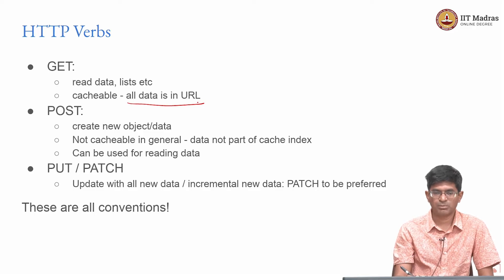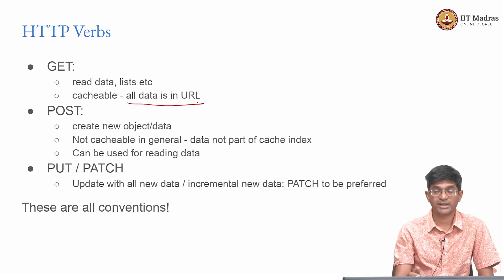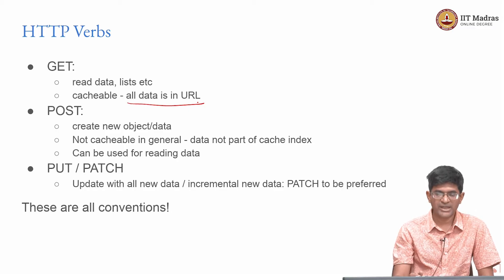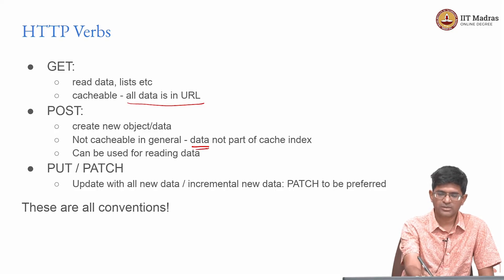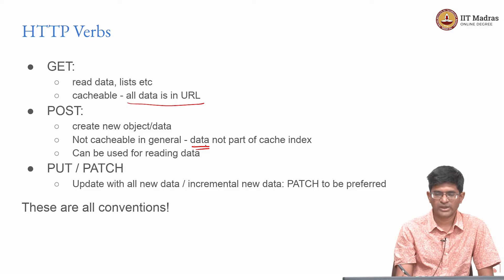POST, on the other hand, does not carry much in the URL — it just has the endpoint to which you are trying to connect, and the rest of the information is present in the request body. Therefore, it makes sense to use POST to actually create new data — you take whatever is in the request body, create a new object in your database, and return a reference to that object. Because the data is not part of the cache index, POST requests are generally not cacheable.